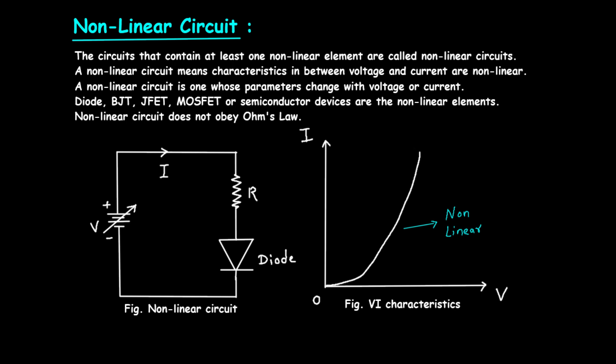When we apply a voltage to this circuit, the diode initially does not conduct any current until the voltage exceeds a certain threshold. For a silicon diode, this threshold is typically around 0.7 volts. Once the voltage exceeds this threshold, the diode starts to conduct, and the current through the circuit increases rapidly with a small increase in voltage.